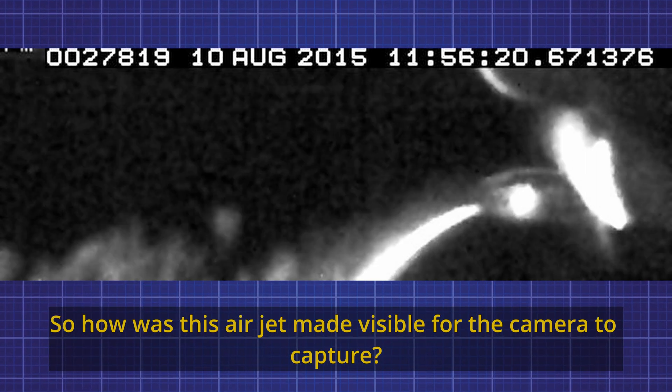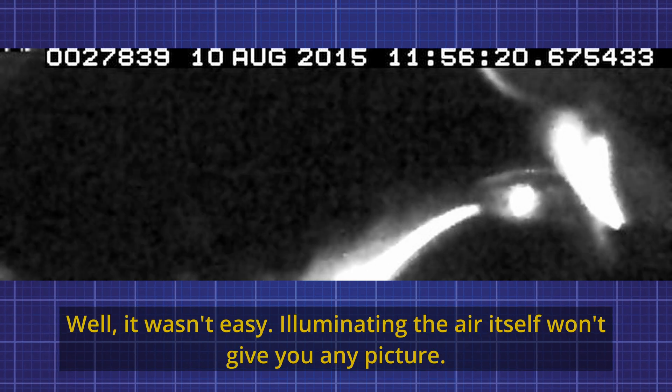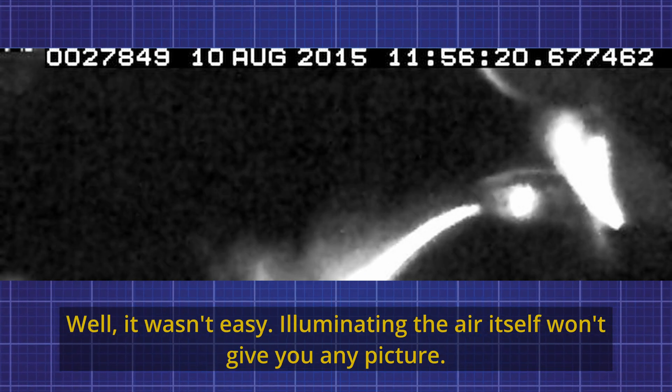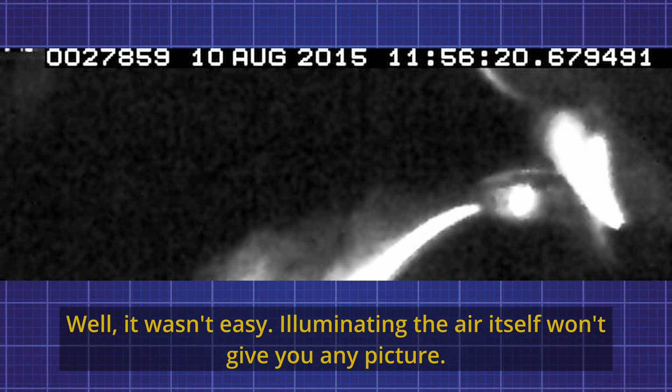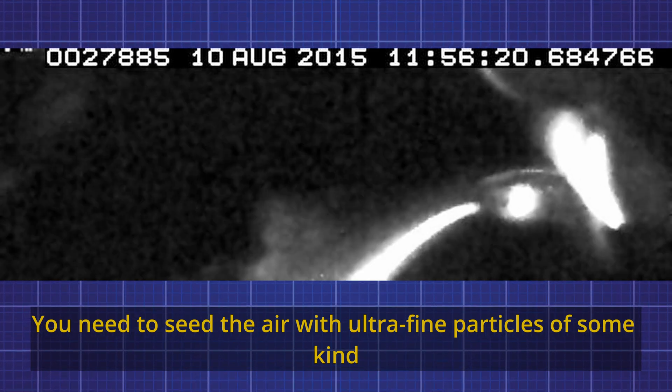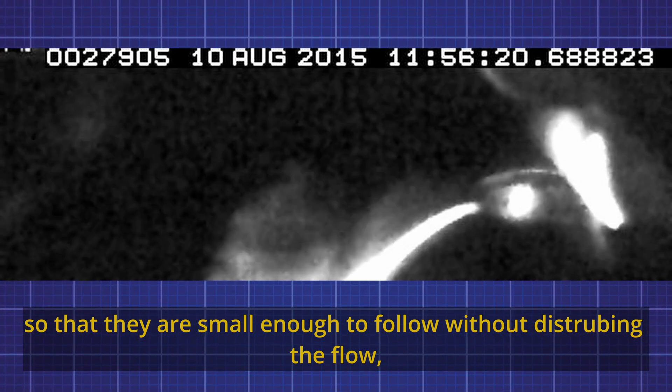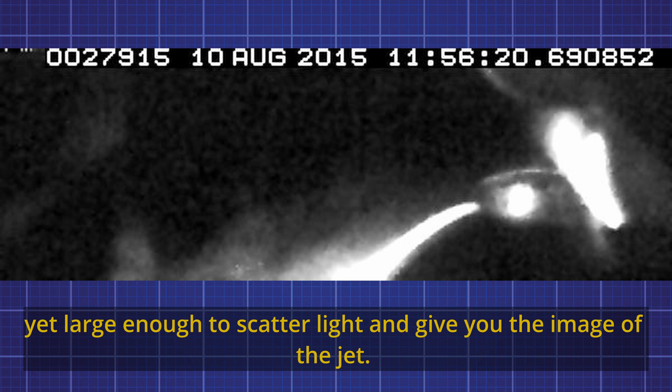How was this air jet made visible for the camera to capture it? Well it wasn't easy. Illuminating the air itself won't give you any picture. You need to seed the air with ultrafine particles of some kind so that they are small enough to follow without disturbing the flow and yet large enough to scatter light and give you the image of the jet.